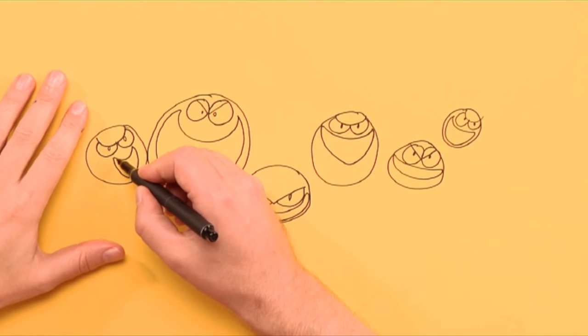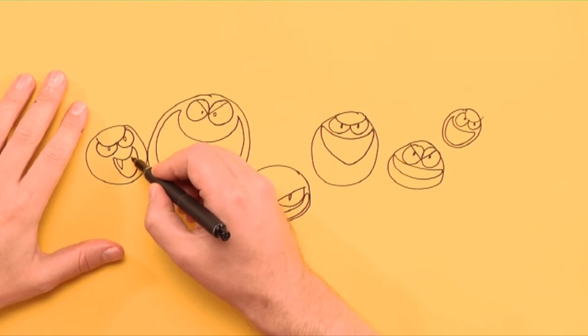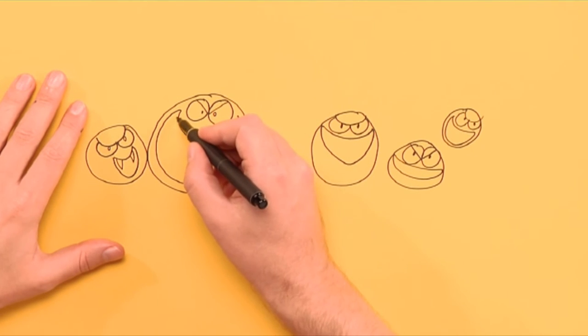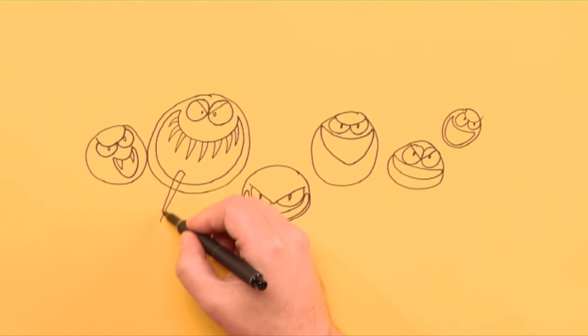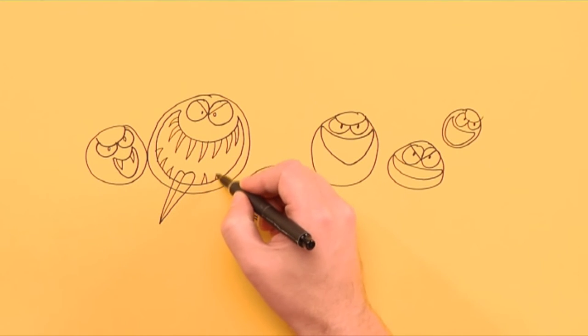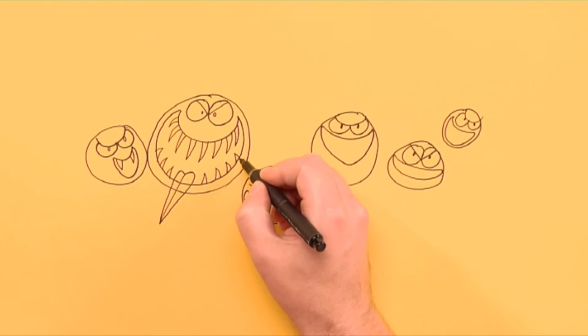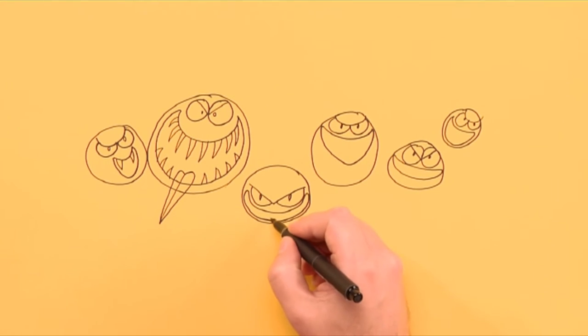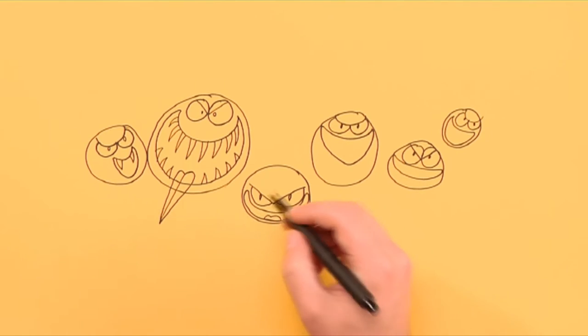Then comes the teeth. And they are big, sharp monster teeth. Let's add some sharp monster tongues too. Then they look extra horrible. Notice that the teeth are different from monster to monster.